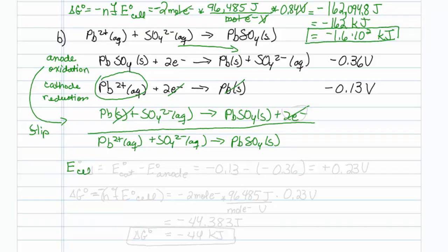Once again, my E cell is equal to E cathode minus E anode. So that should be minus 0.13 minus a minus 0.36. So that should give me a plus 0.23 volts.